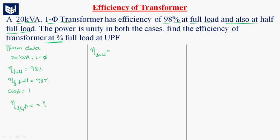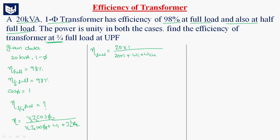Full load efficiency is output by input. The formula for efficiency eta is equal to output by input, which is V2I2 cos phi 2, divided by V2I2 cos phi 2 plus losses. The iron losses and copper losses are I squared into R0. So here, V2I2, that is the VA rating 20kVA, multiplied by power factor 1, divided by output plus losses. The efficiency is given as 98%, which is 0.98.